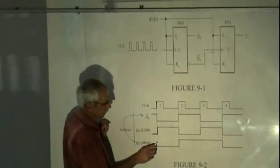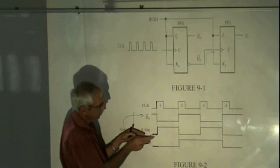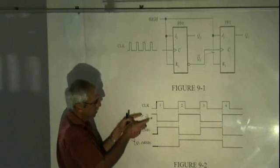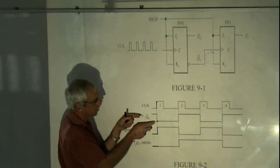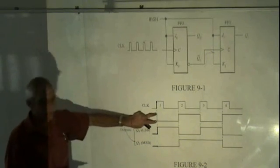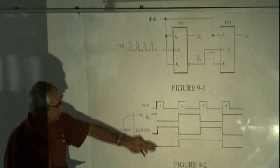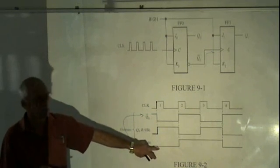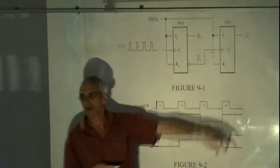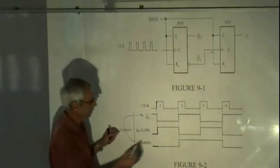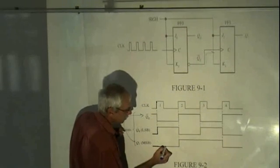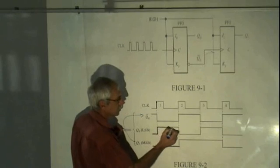But now, what do we see? Q0 goes from a 0 to a 1, so NOT-Q goes from a 1 to a 0, which is a negative edge. So, that is a negative edge. Can Q1 change? No, because Q1 also changes on a positive edge. So, it's going to stay the same until the next clock pulse.